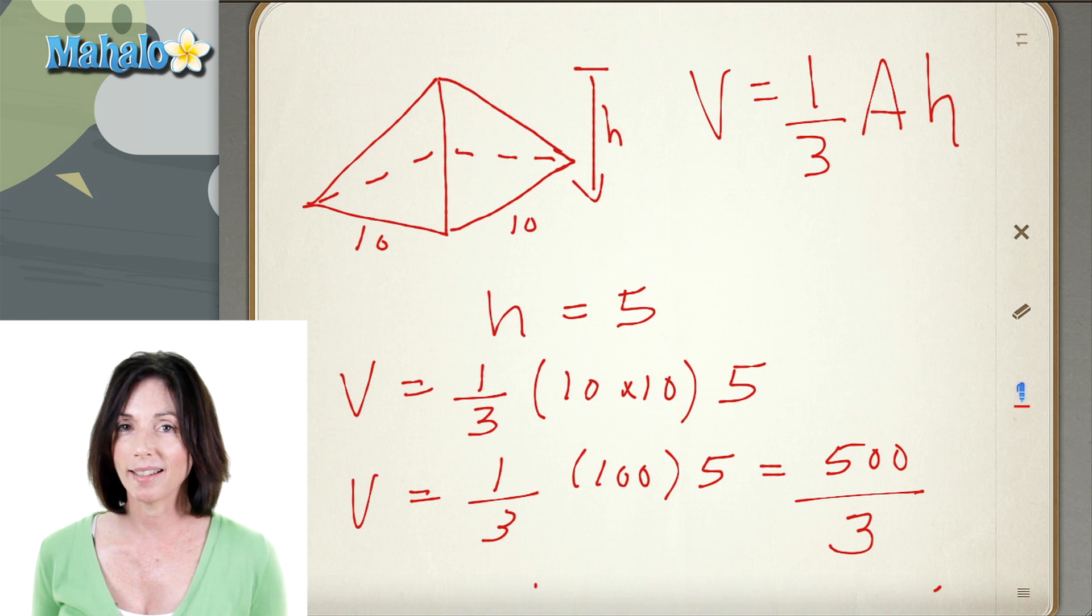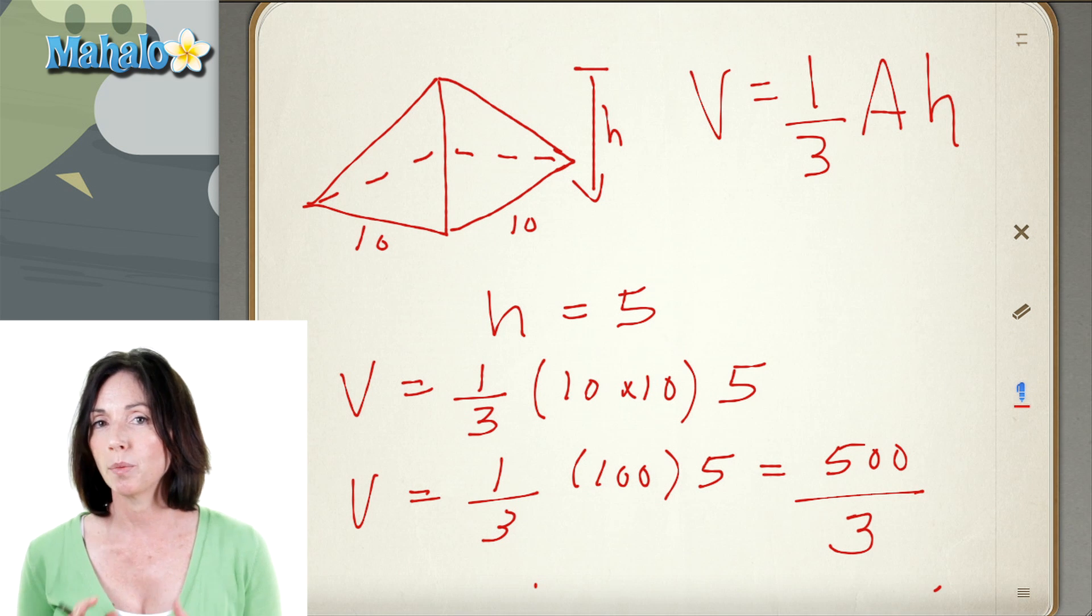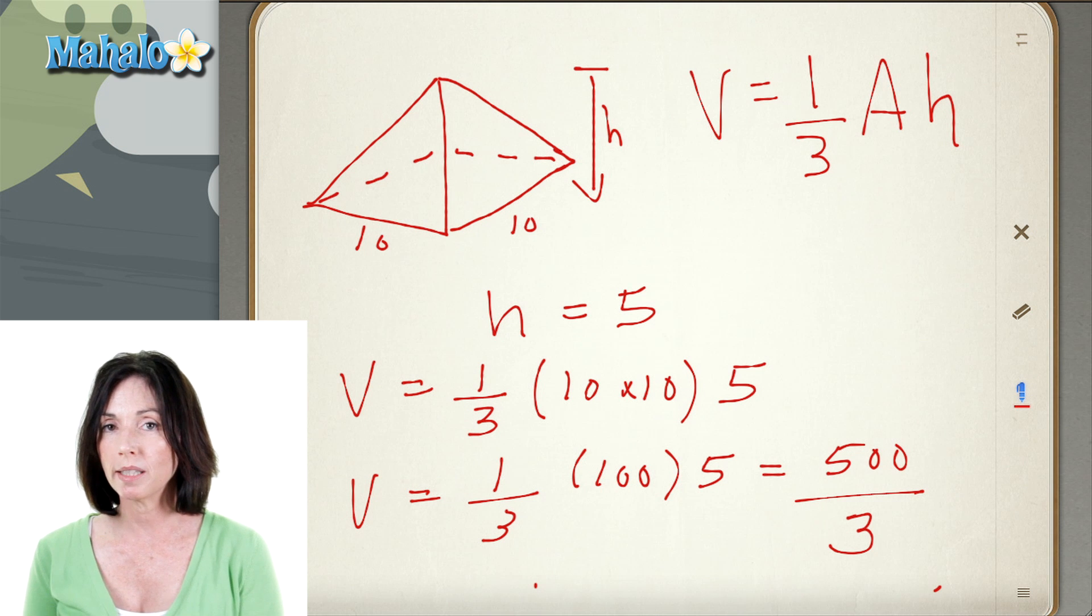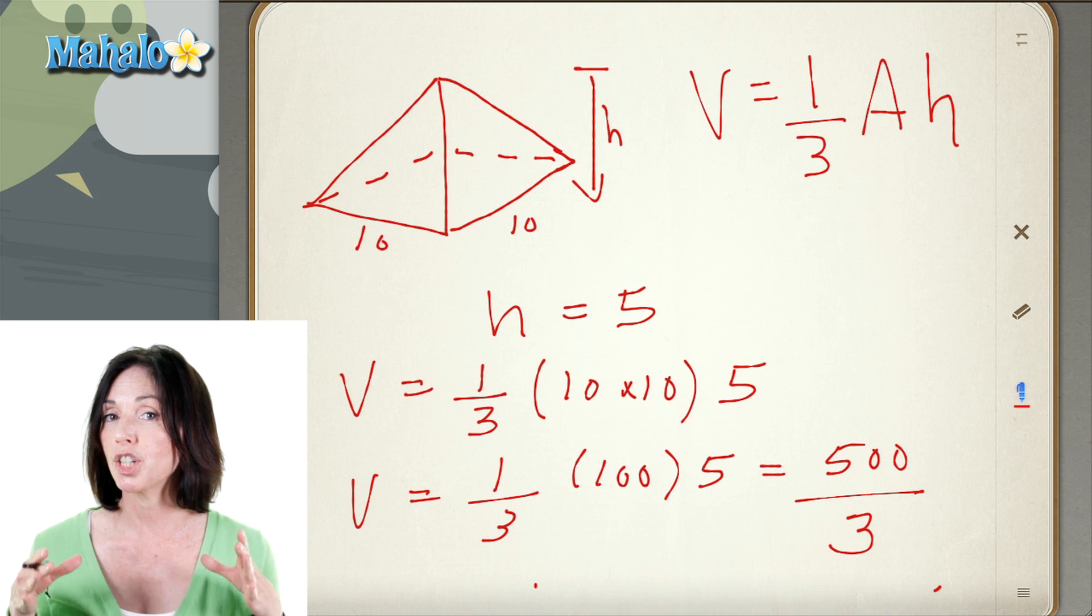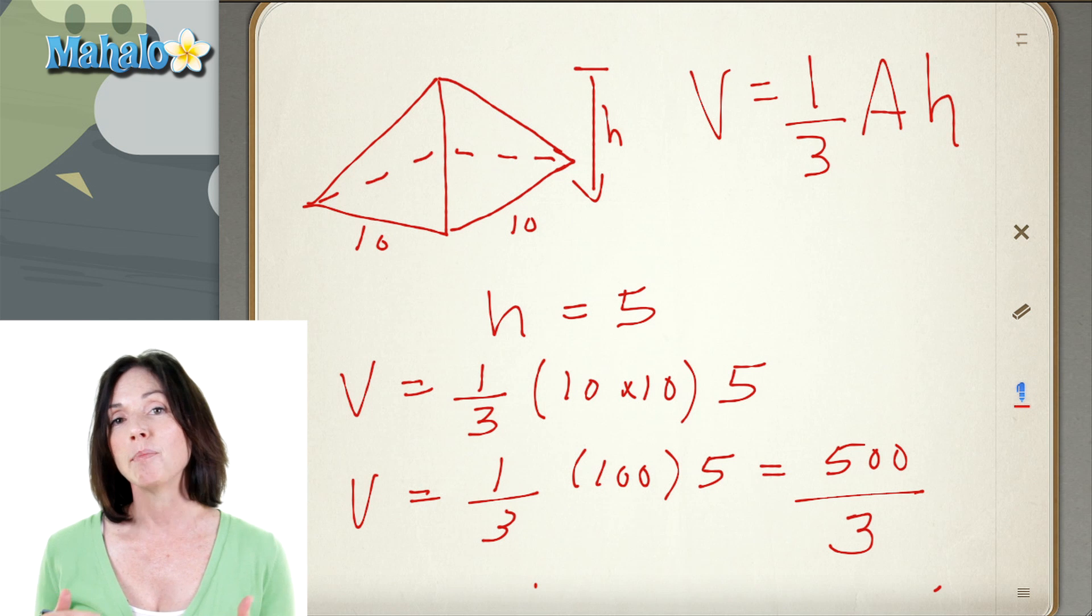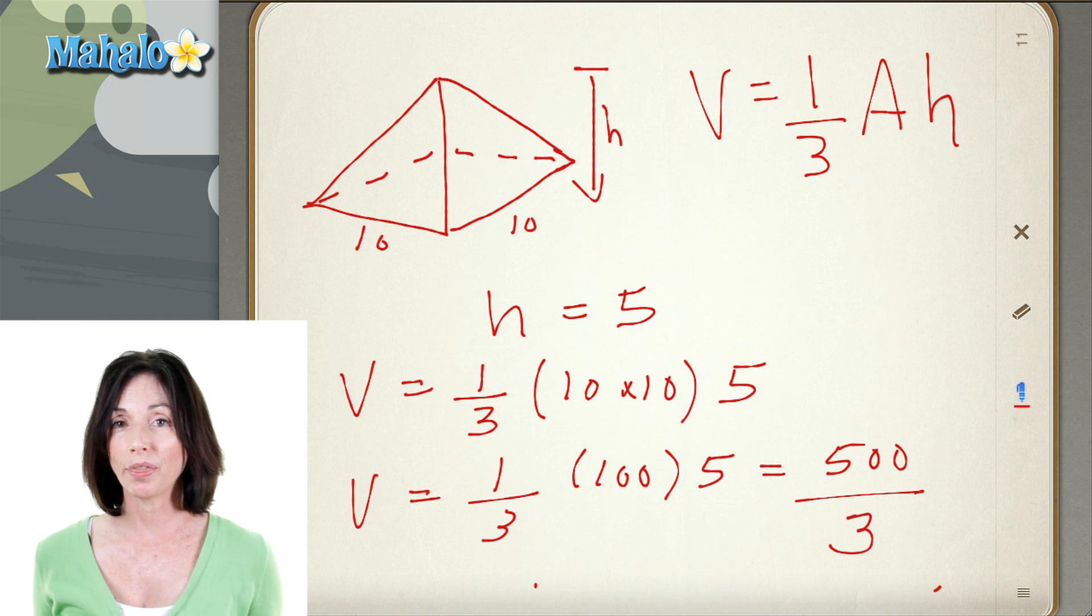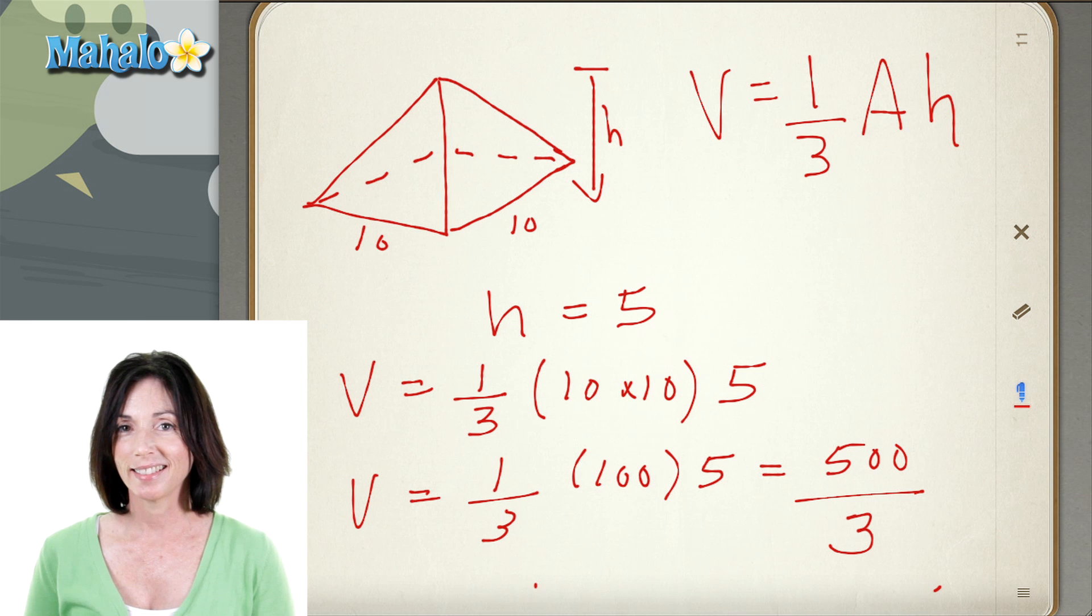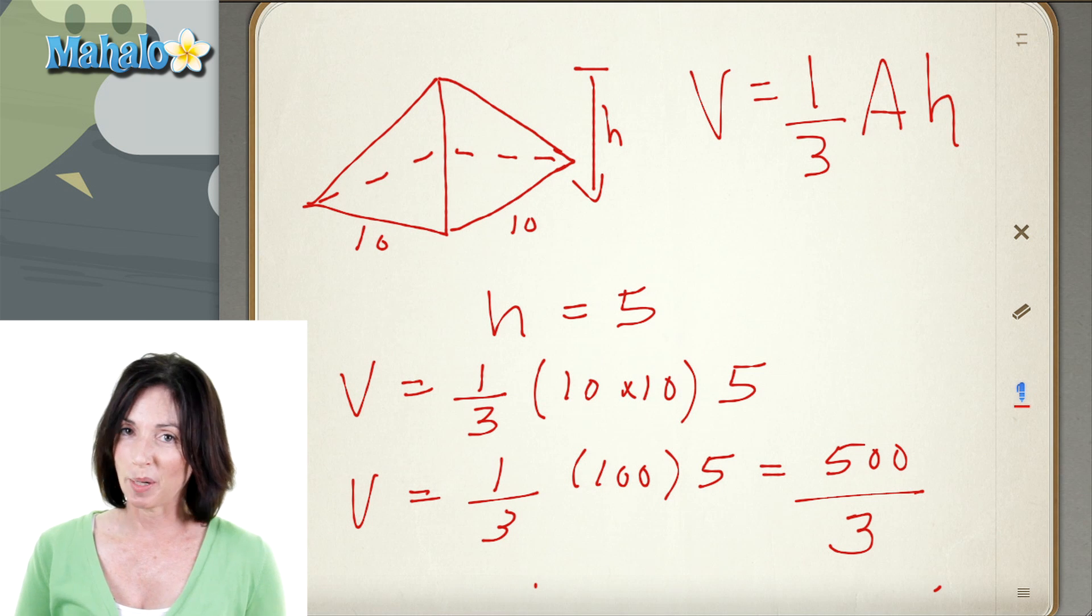And you can simplify that if you like. But it's really important when you're finding out the volumes of pyramids to make sure that you identify the shape of its base first. Find that area, and then multiply that area by the height. Then you take one-third of the whole thing, and that's it. That's how you find the volume of a pyramid.